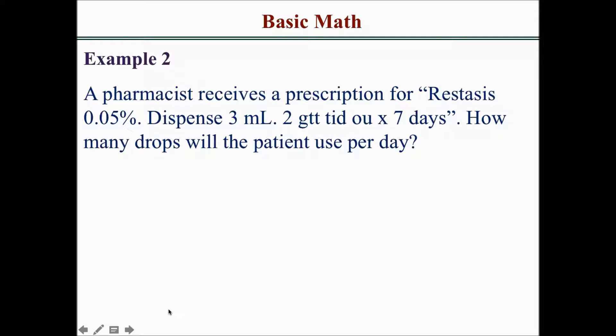This is not a difficult problem, but you need to make sure you're aware of all the pharmacy abbreviations used in the pharmacy, especially in community. GTT is drops. TID is 3 times a day. OU is both eyes. If you know that, this problem will be easy to solve.